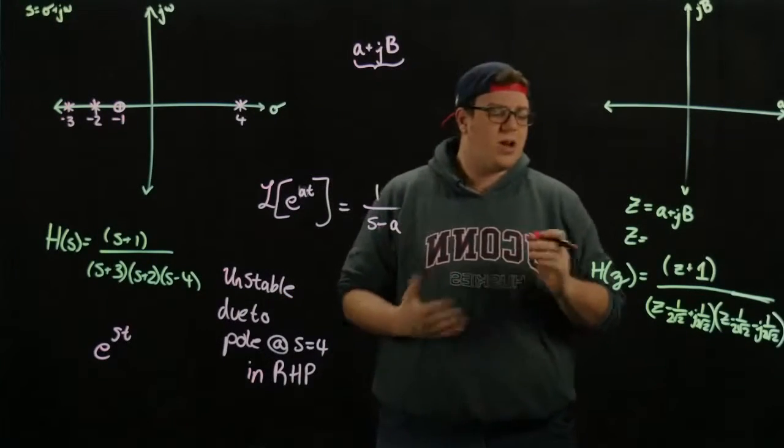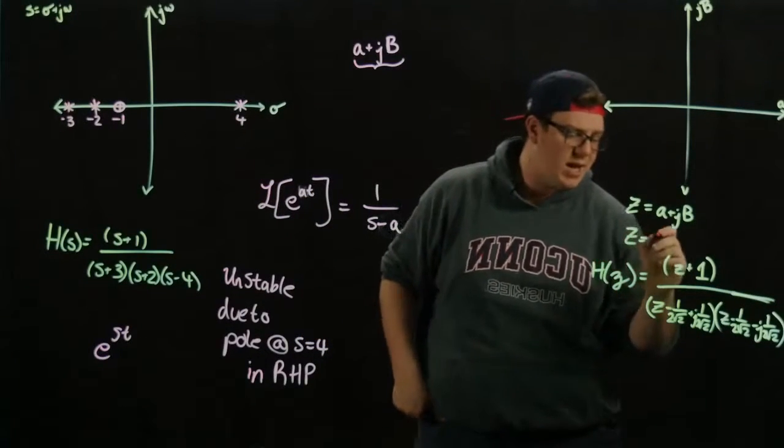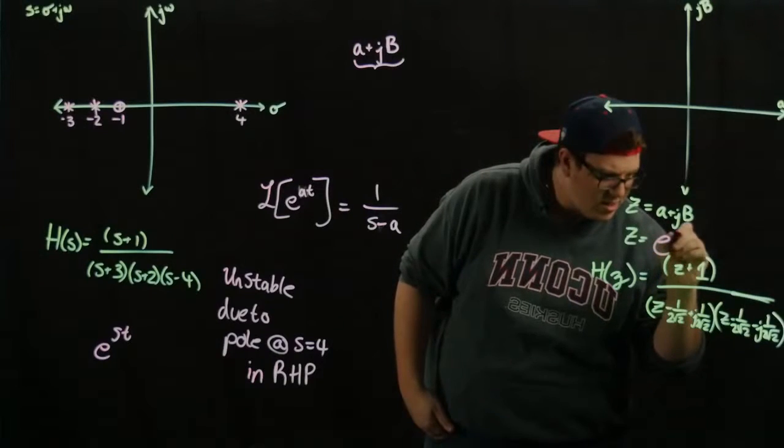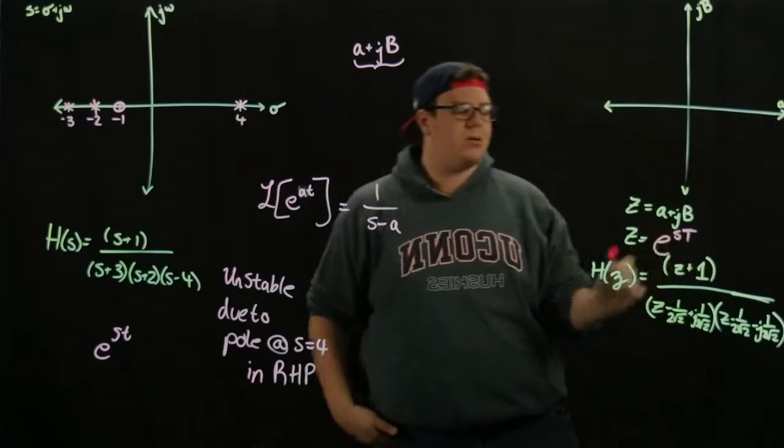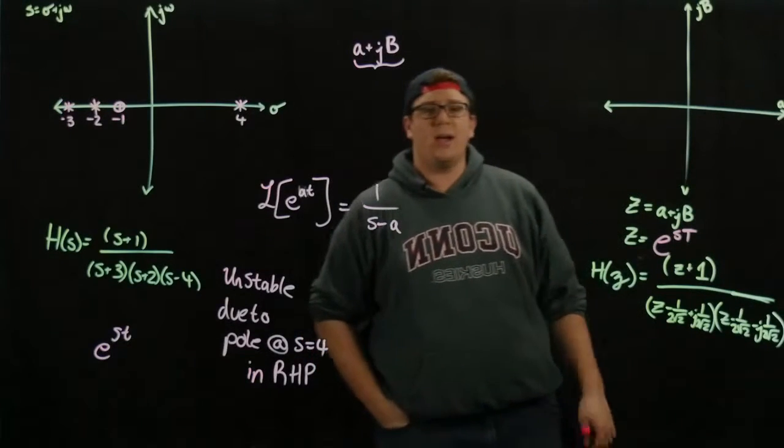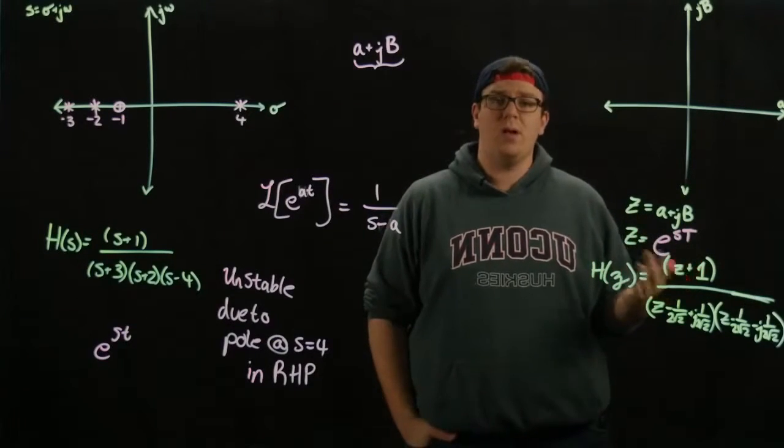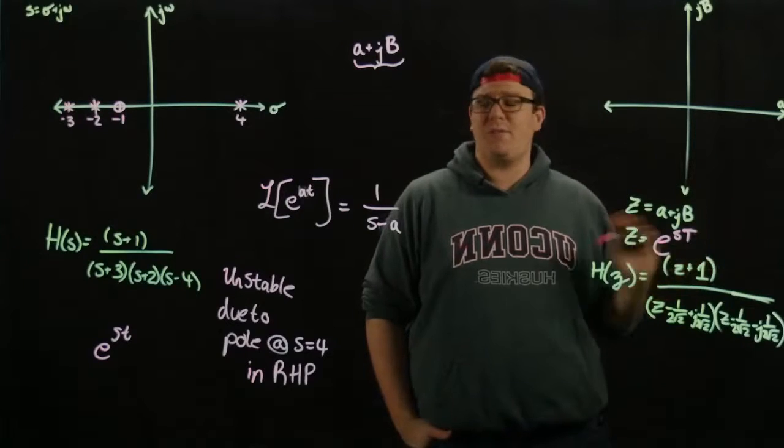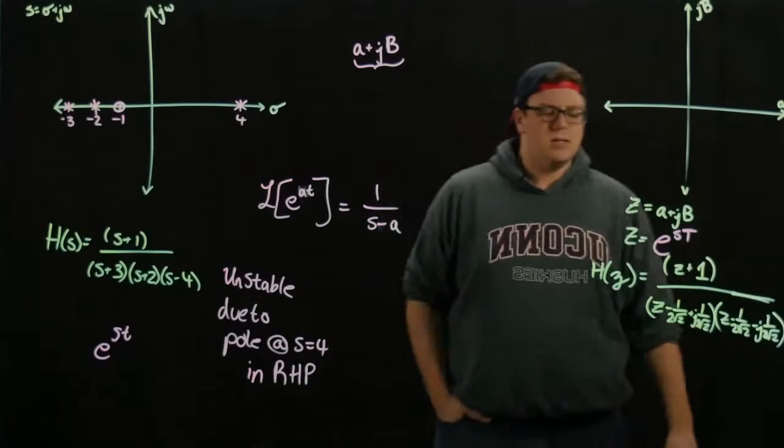The transformation for Z, if we want to transform from S to Z, is we use E to the S capital T, where capital T is actually your sampling time. So the positions of your poles will actually be affected by how quickly you sample, which is important to remember because if we sample at different speeds, we actually will get different responses.